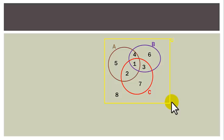Here, region 1 represents the intersection of the 3 sets: A intersection B intersection C. Region 2 is A intersection B-complement intersection C — that is, part of A and C but outside B.